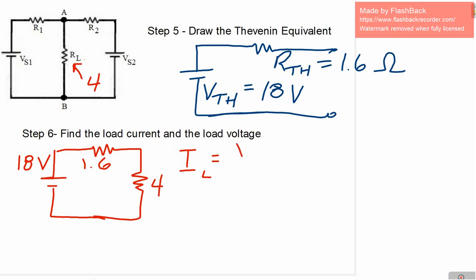So we can find the load current. We just have a simple series circuit now. So we're going to take 18 volts and divide it by total resistance in this series circuit. That's just 5.6 ohms. And we get a current of 3.21 amps.